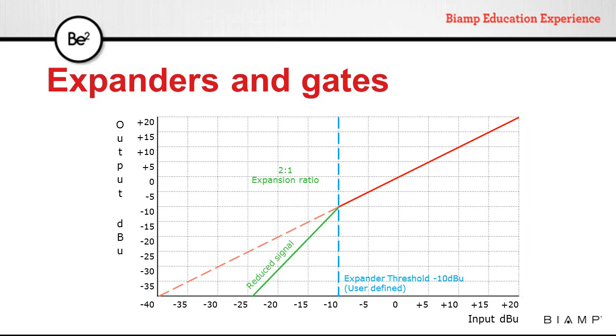If we increase the ratio to 2 to 1, we see the signal being reduced below the threshold. We are increasing our dynamic range.